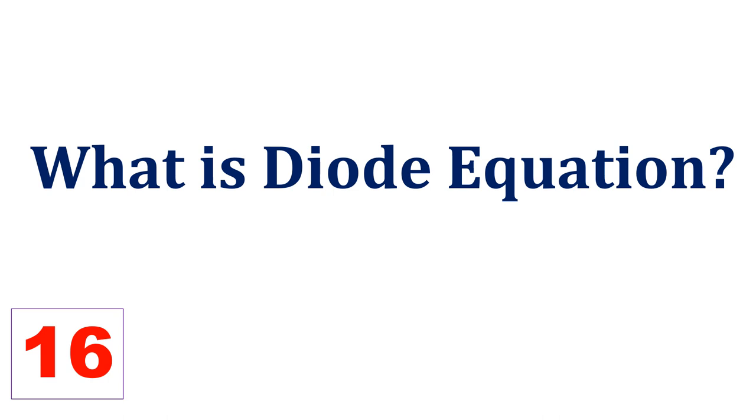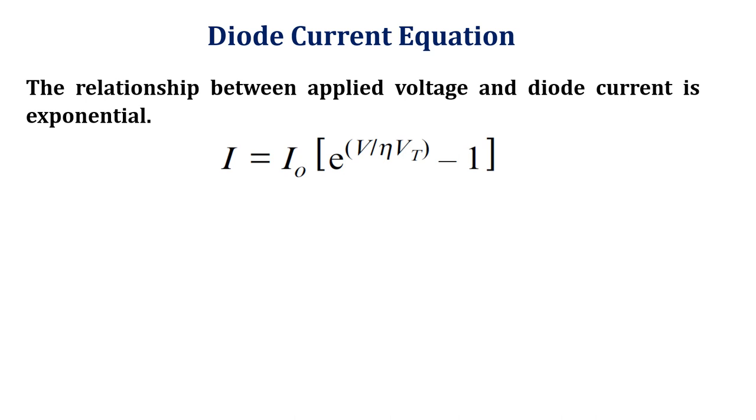Now let us learn about the diode equation. The diode current depends on the voltage applied to it.